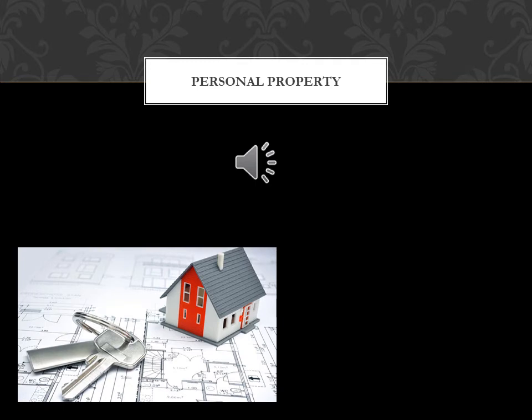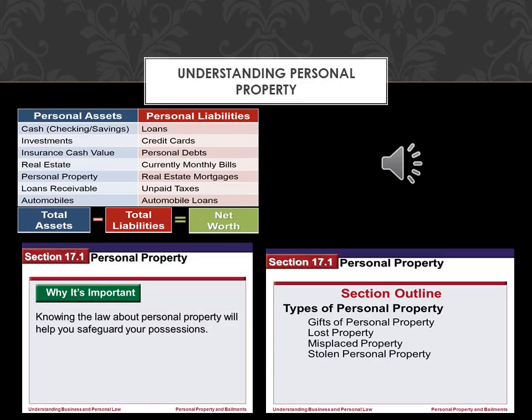Personal property is a class of property that can include any asset other than real estate. The distinguishing factor between personal property and real property is that personal property is mobile — it isn't fixed permanently to one particular location. Personal property is also known as movable property, movables, and chattels.